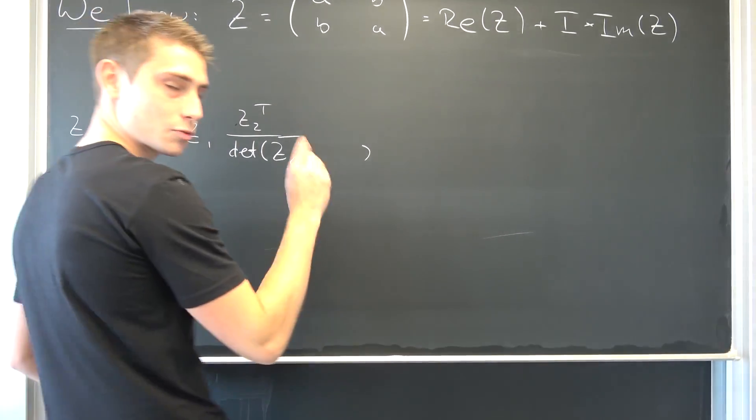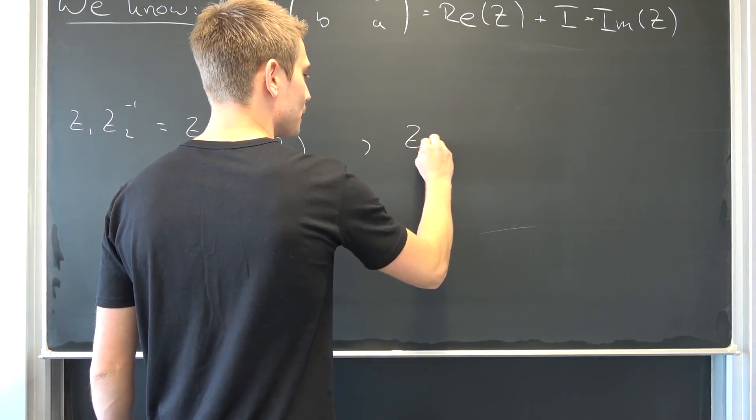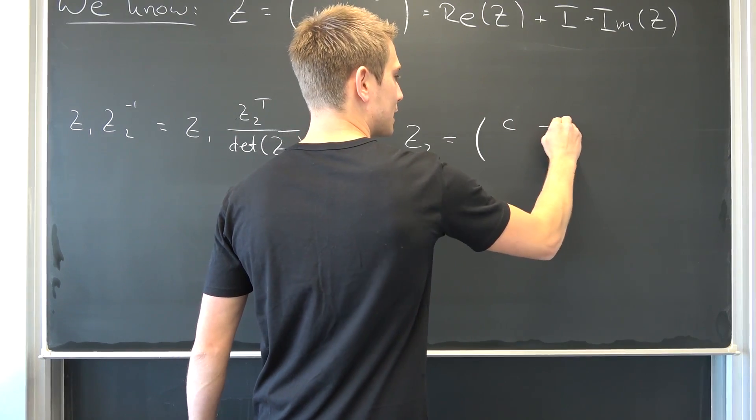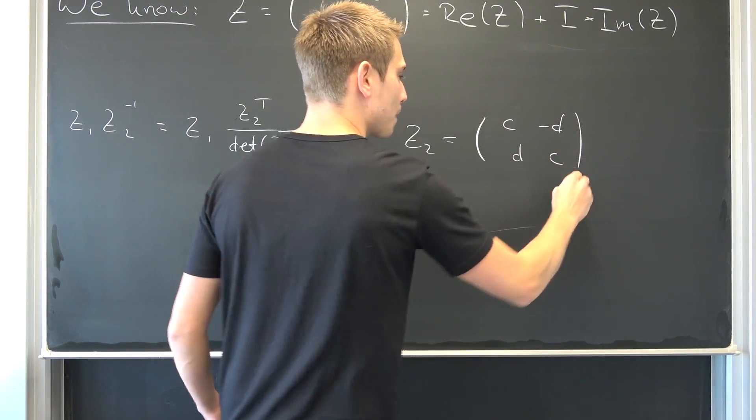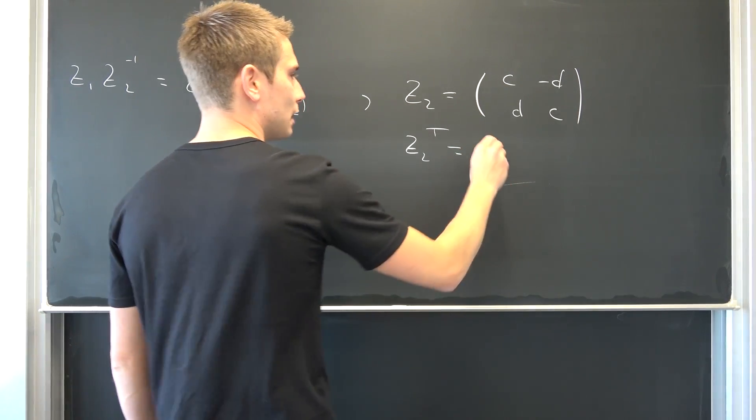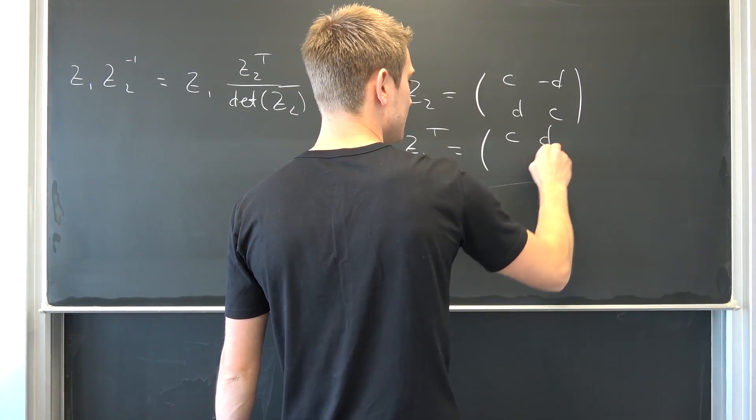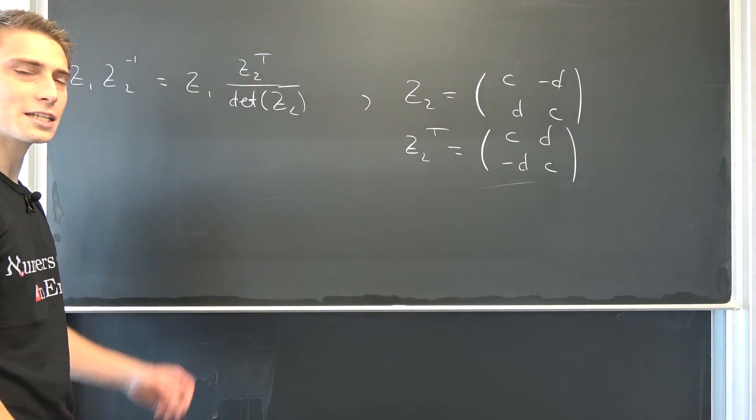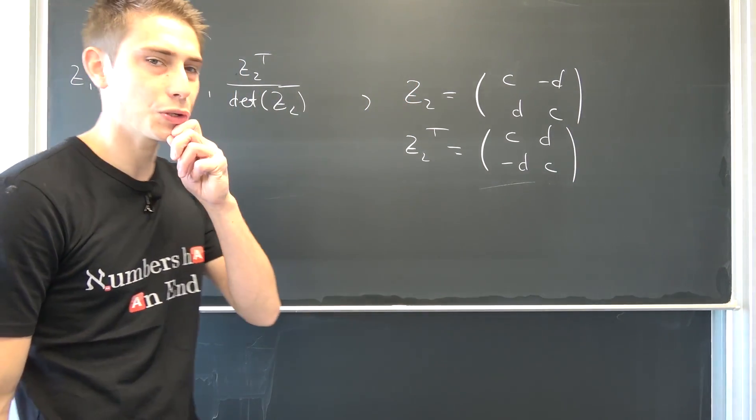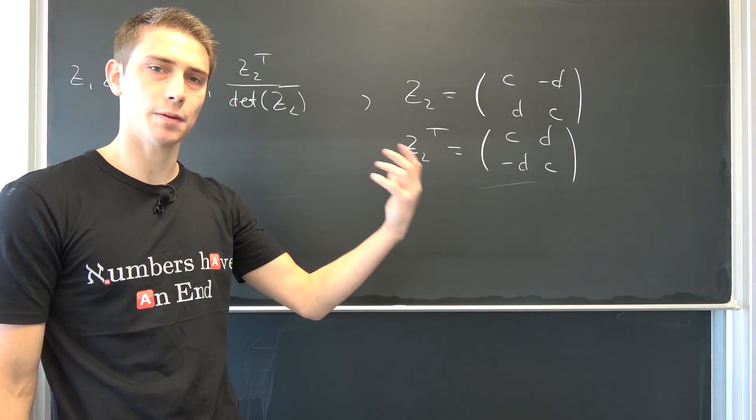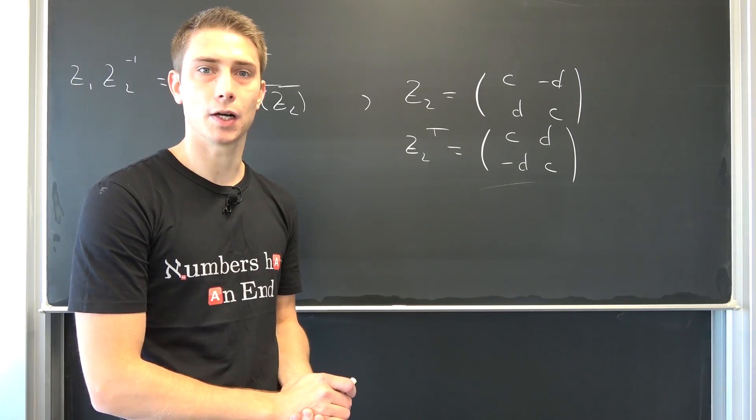It's really important. Do not forget that z2 has been c negative d, d and c, and then we had to transpose to be nothing other than c d, negative d and c. This has been our transpose and do you see what's basically changed? Our imaginary part has been multiplied by a factor of negative 1.